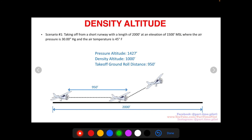In scenario one, using the chart and the Piper Cherokee POH at those conditions, we get a pressure altitude of 1,427 feet and a density altitude of about 1,000 feet, with a takeoff ground roll of about 950 feet. On our 2,000-foot runway, we're lifting off about halfway down the runway.